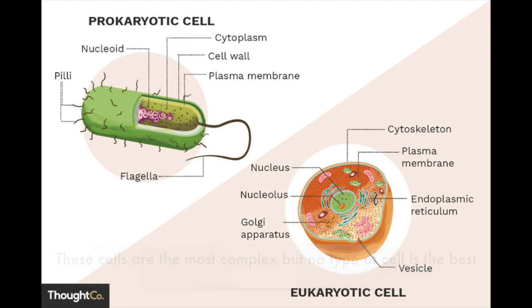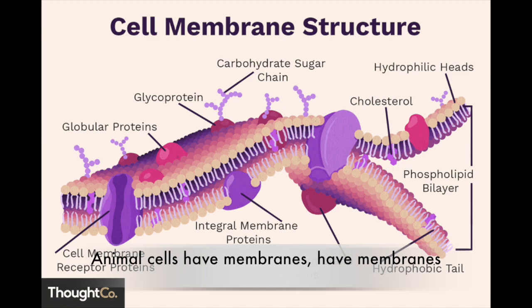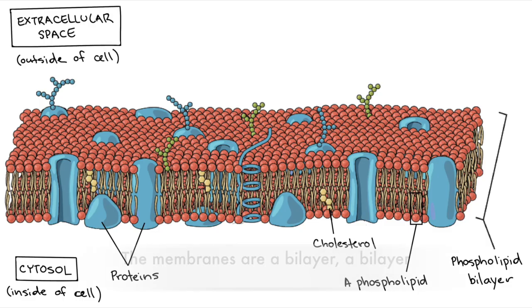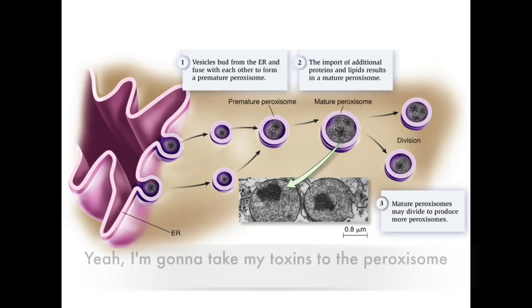Animal cells have membranes. The membranes are a bilayer. Yeah, I'm gonna take my toxins through the peroxisome, I'm gonna detox till I can't no more.